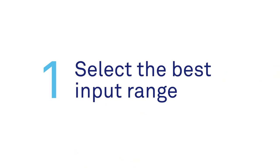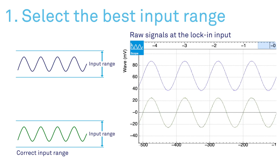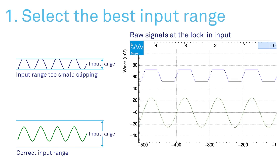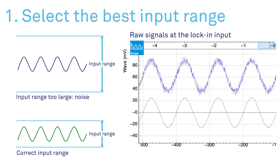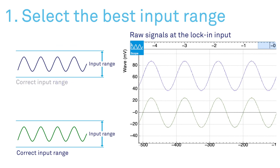Let's jump to the first. Selecting the best input range is crucial to obtain good measurements. You need to set it large enough to avoid clipping your signal and small enough to exploit the full range of the input analog to digital converter.